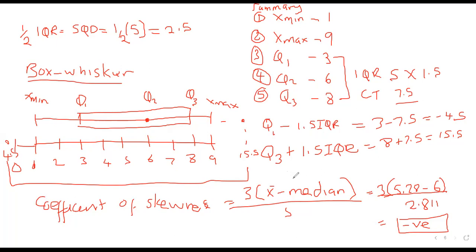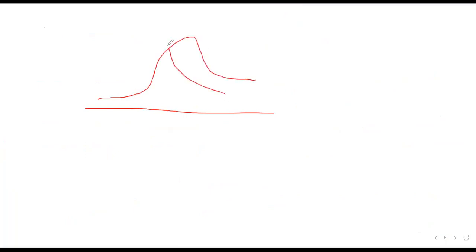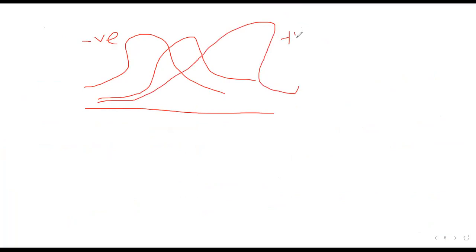The formula for the coefficient of skewness is 3 times (x-bar minus median) over standard deviation — it is 3, not summation. Whenever the mean is more than the median, the result is positive and skewed to the right; whenever the mean is less than the median, the result is negative and skewed to the left. Skewness measures the degree of bias in the distribution. In an exam context: if most students fail, it's skewed left; if most pass, it's skewed right.